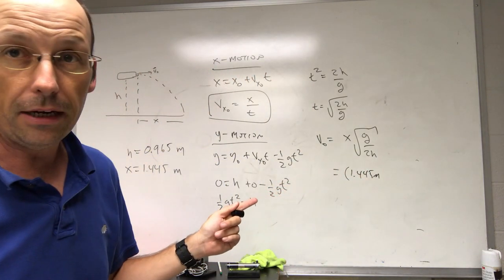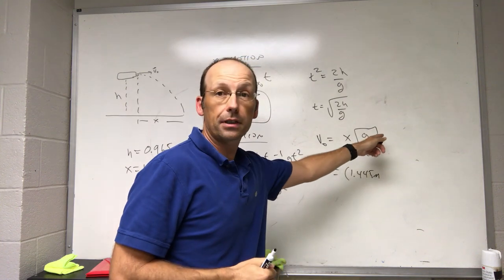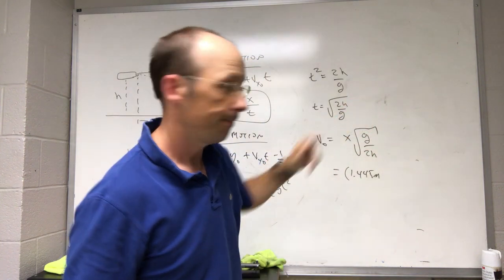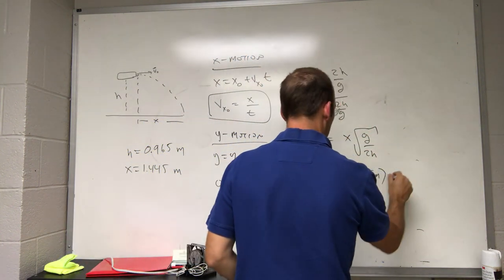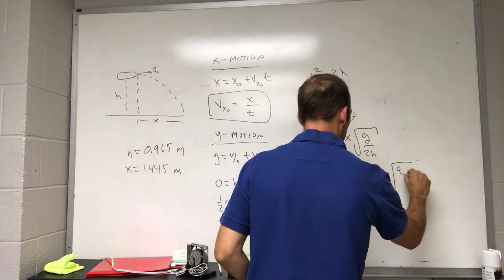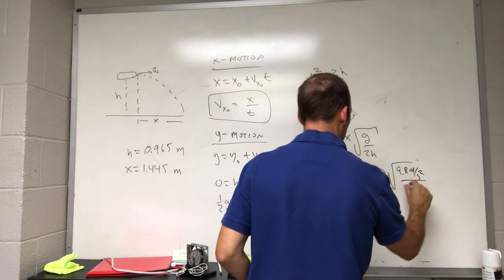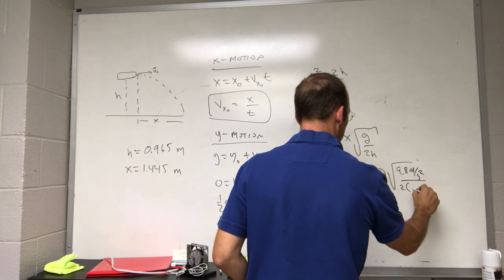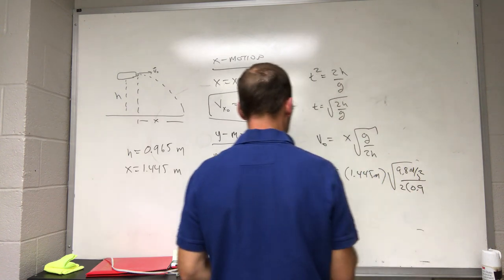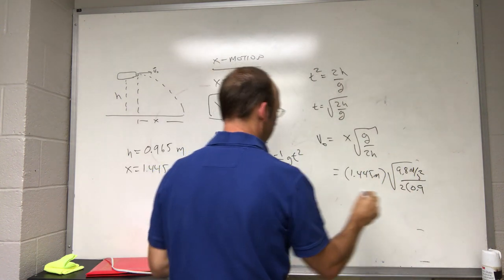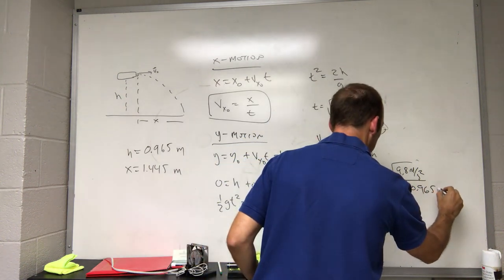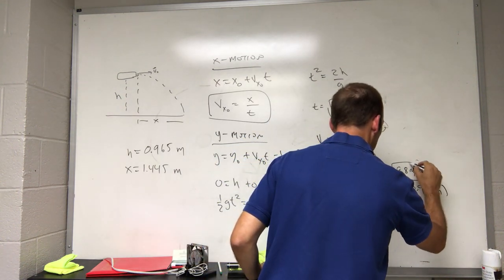If you don't put the distance in meters, and g is in meters per second squared, you're going to have a problem. Times the square root of 9.8 meters per second squared, divided by 2 times 0.965 meters.